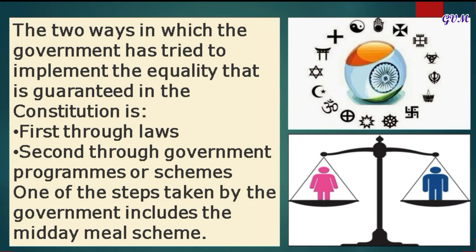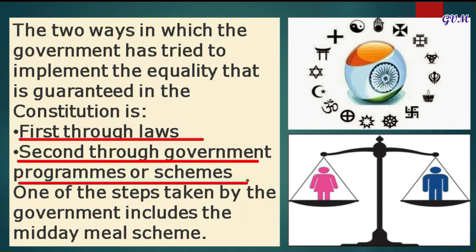There are two ways through which the government has tried to implement the equality guaranteed in the Constitution. The first way is through laws — there are several laws in the Indian Constitution that protect every person's right to be treated as equal. The second way is through government programs or schemes. There are many schemes and programs that help the disadvantaged sections of society and offer opportunities to previously discriminated groups for their growth and development.